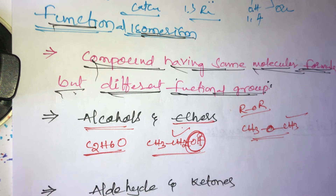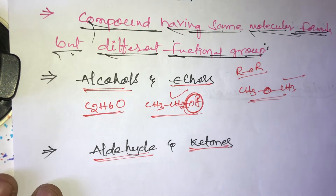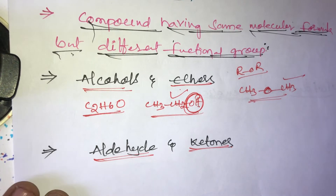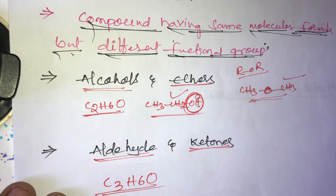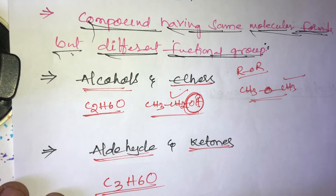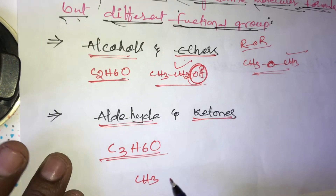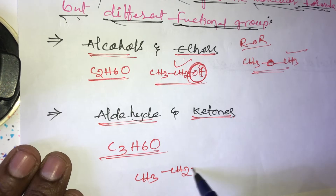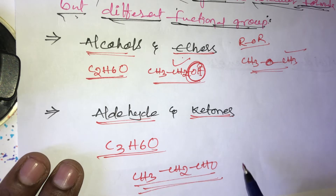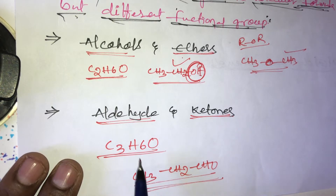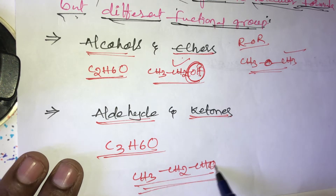Another example is aldehydes and ketones. Aldehydes and ketones also have the same molecular formula. Take the example C3H6O. For an aldehyde, we can write CH3CH2CHO, which is called propanal.